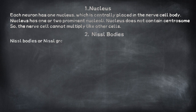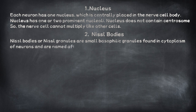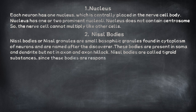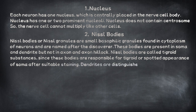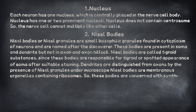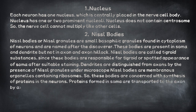Nissl bodies, or Nissl granules, are small basophilic granules found in the cytoplasm of neurons and are named after their discoverer. These bodies are present in the soma and dendrite, but not in the axon and axon hillock. Nissl bodies are called tigroid substances, since they are responsible for the tigroid or spotted appearance of soma after suitable staining. Dendrites are distinguished from axons by the presence of Nissl granules under the microscope. Nissl bodies are membranous organelles containing ribosomes, and are concerned with synthesis of proteins in neurons. Proteins formed in soma are transported to the axon by axonal flow.